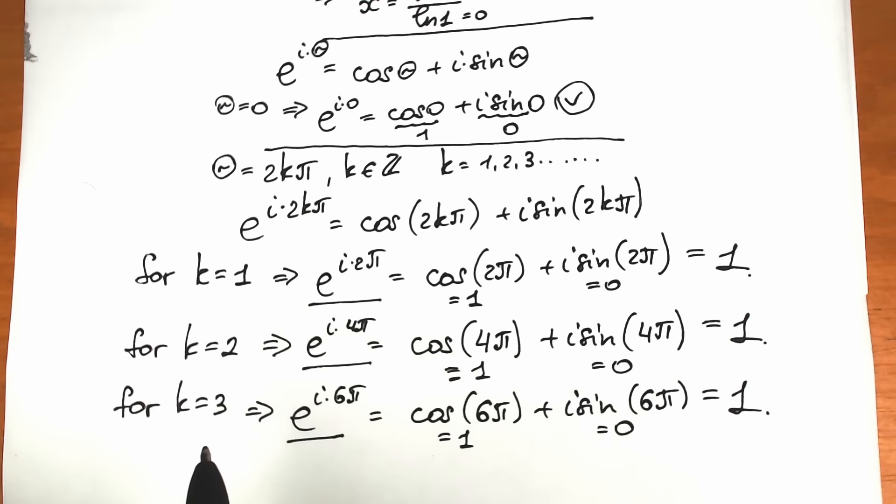So our key result from Euler's identity is: e to the power i times 2k pi equals 1, where k is an integer — not a real number, but an integer. So k is 1, 2, 3, 4, and so on. This is the main reason why we created this complex part.